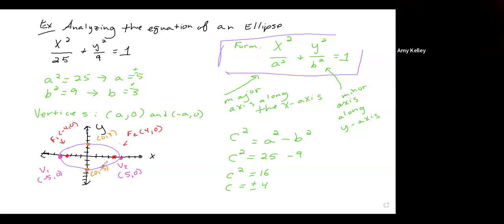And then we used the formula c squared equals a squared minus b squared to determine the coordinates of the foci, plus or minus 4, 0. This concludes the example, and I hope you found it helpful.